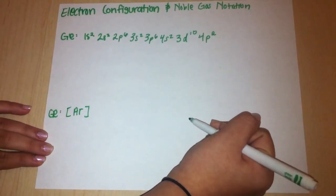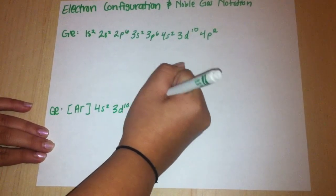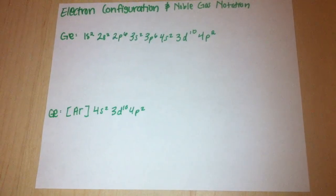After the bracket AR bracket, you would write 4s2, 3d10, and 4p2. And then you have done the noble gas notation. Bye!